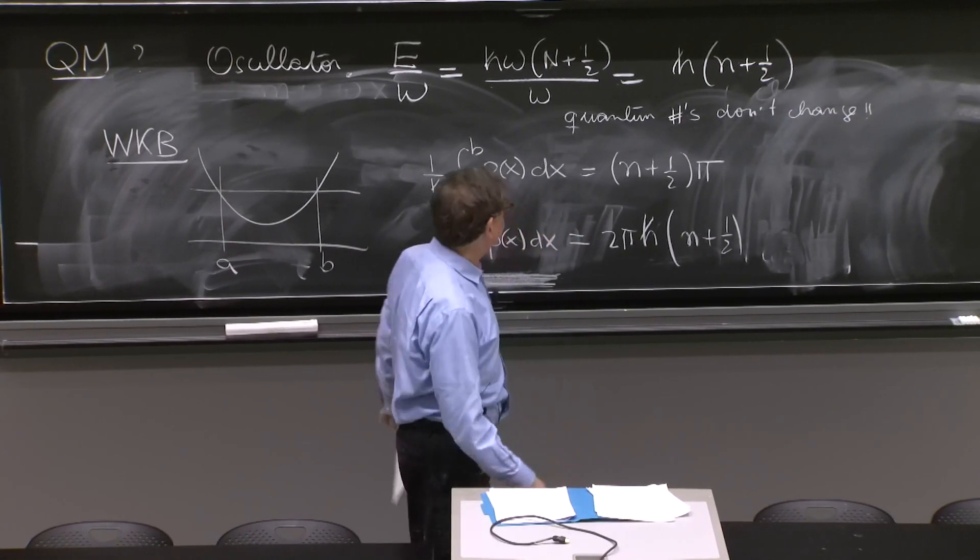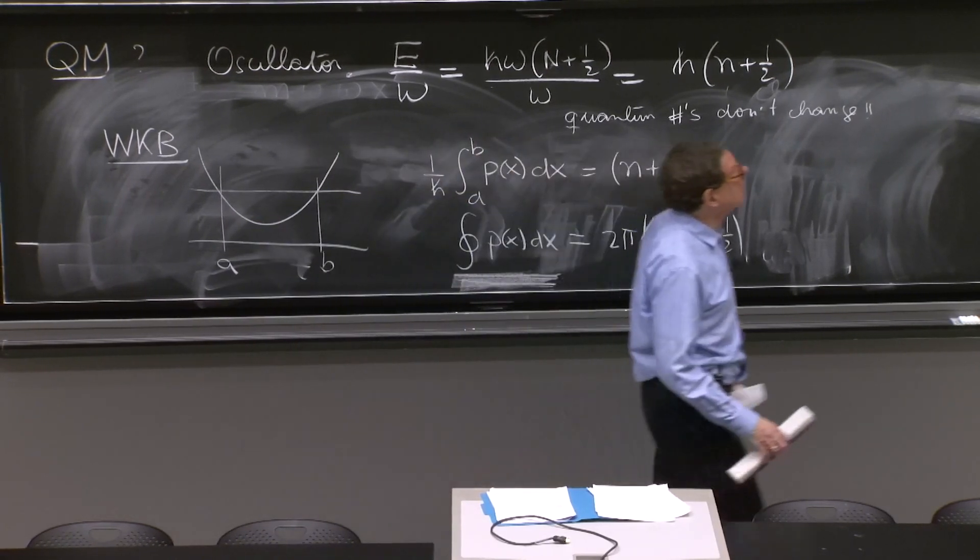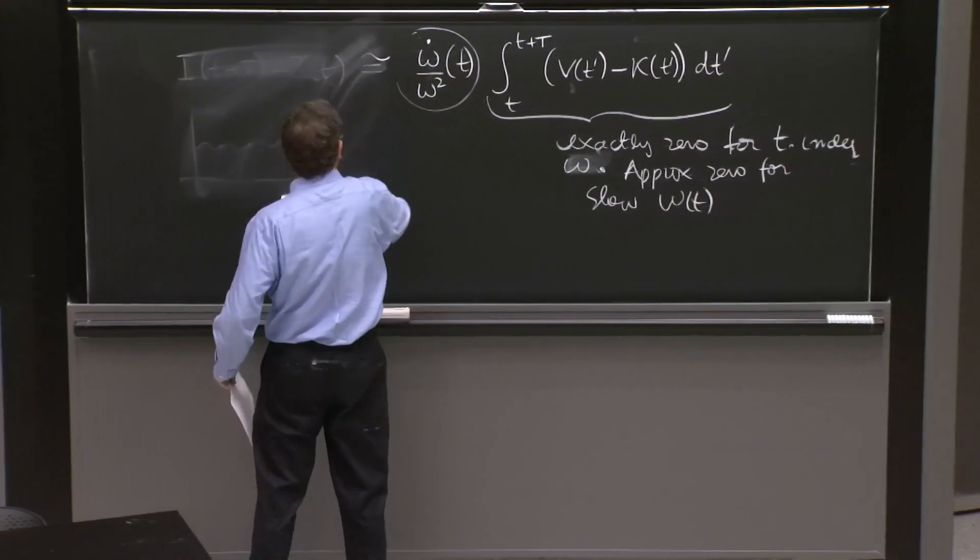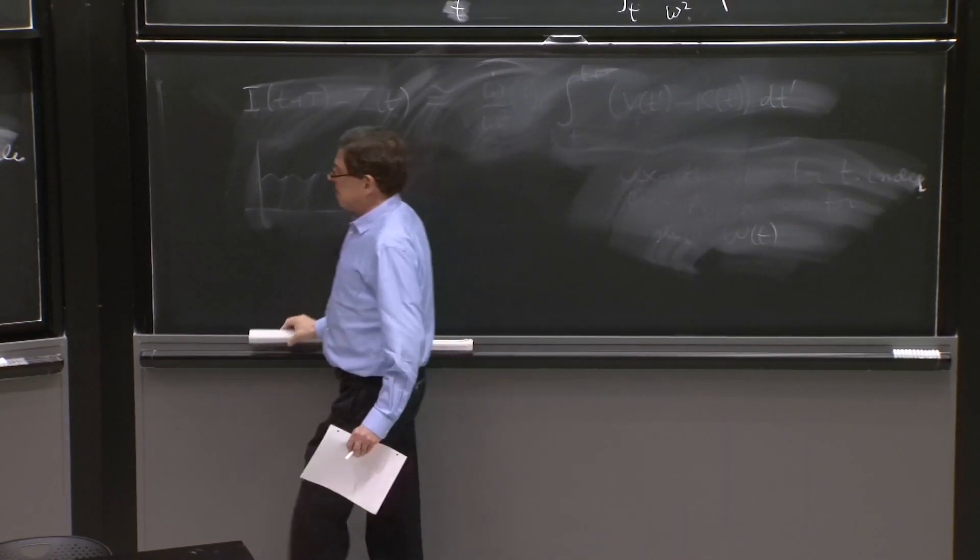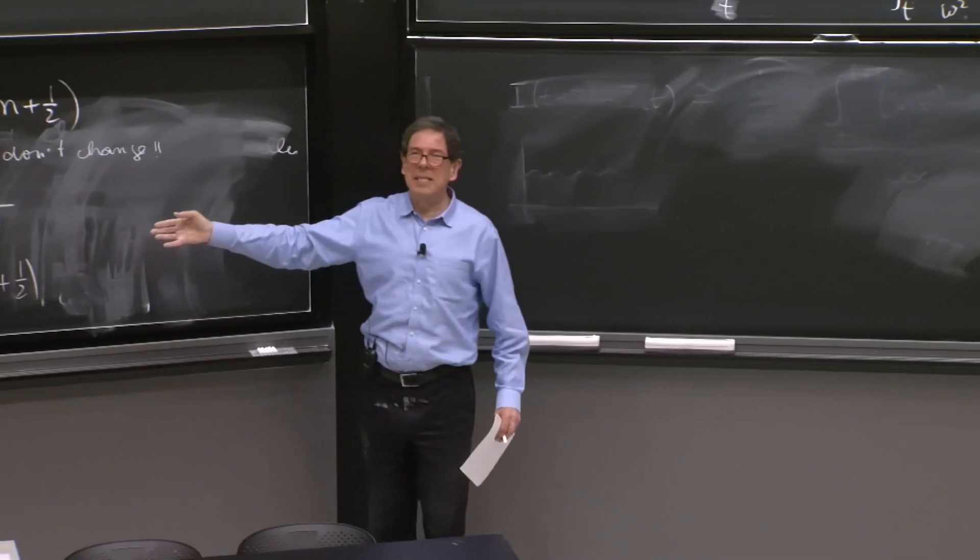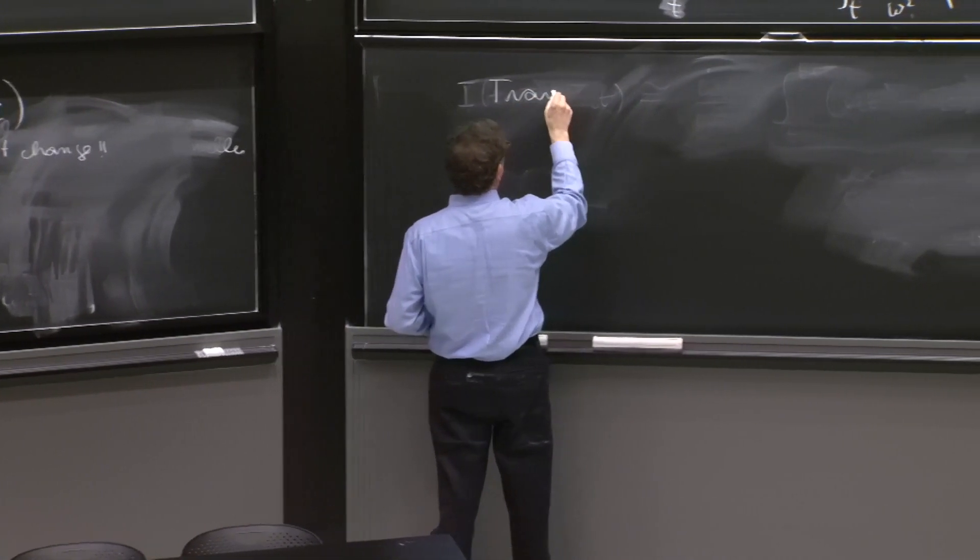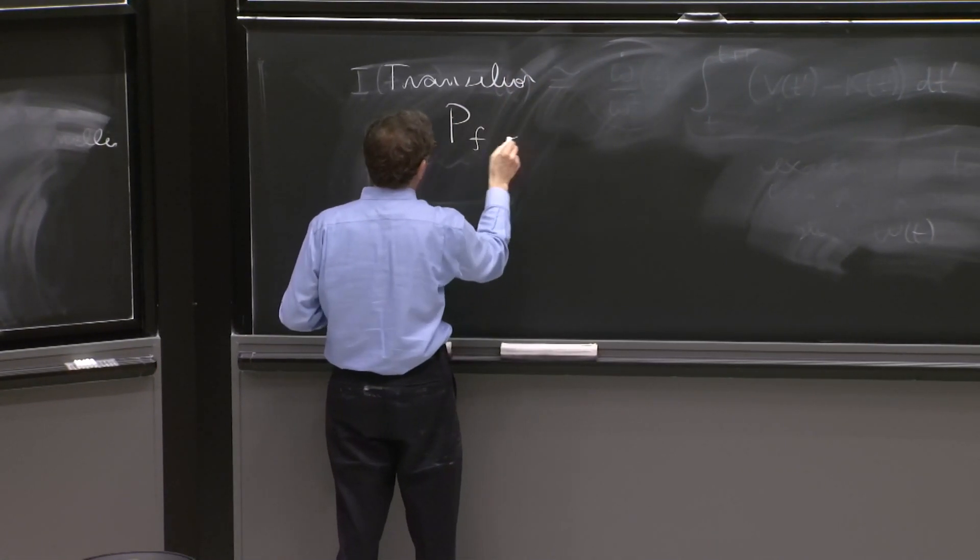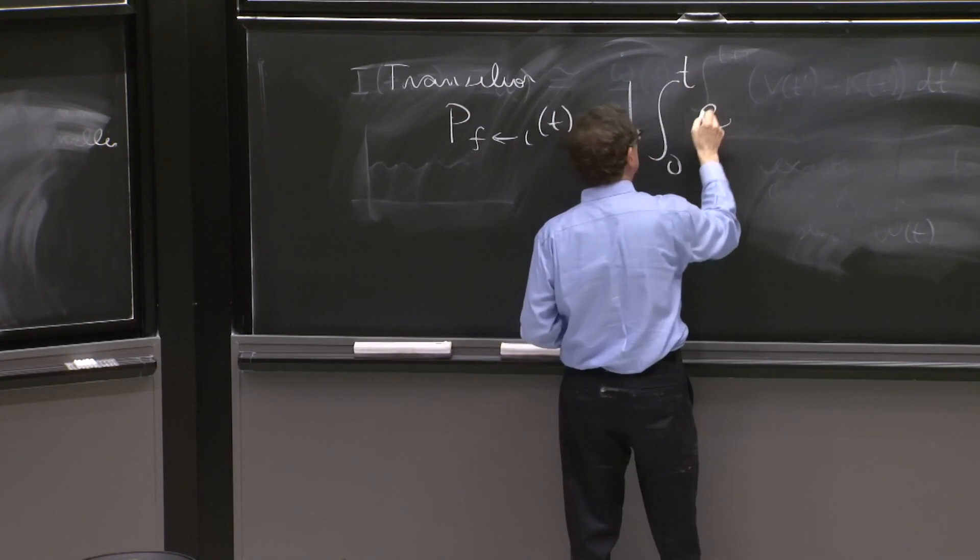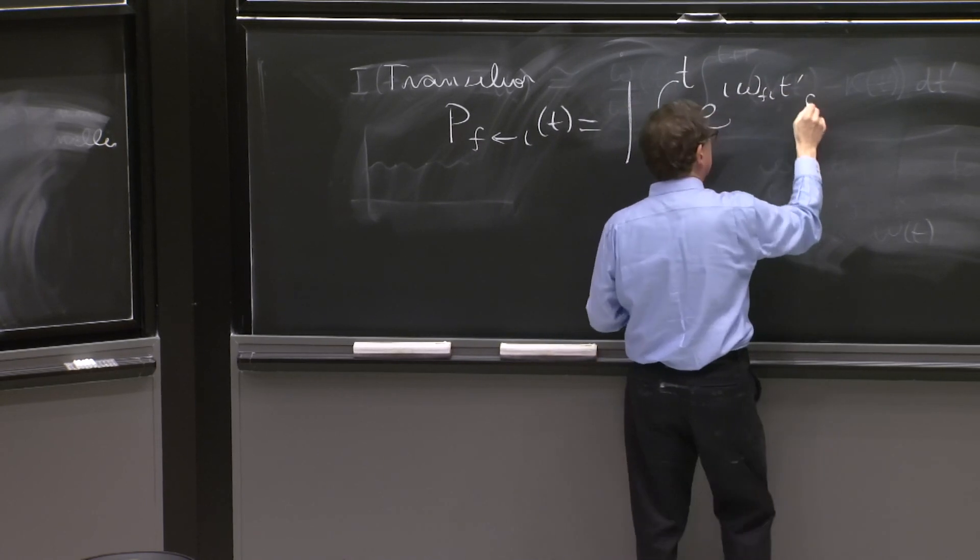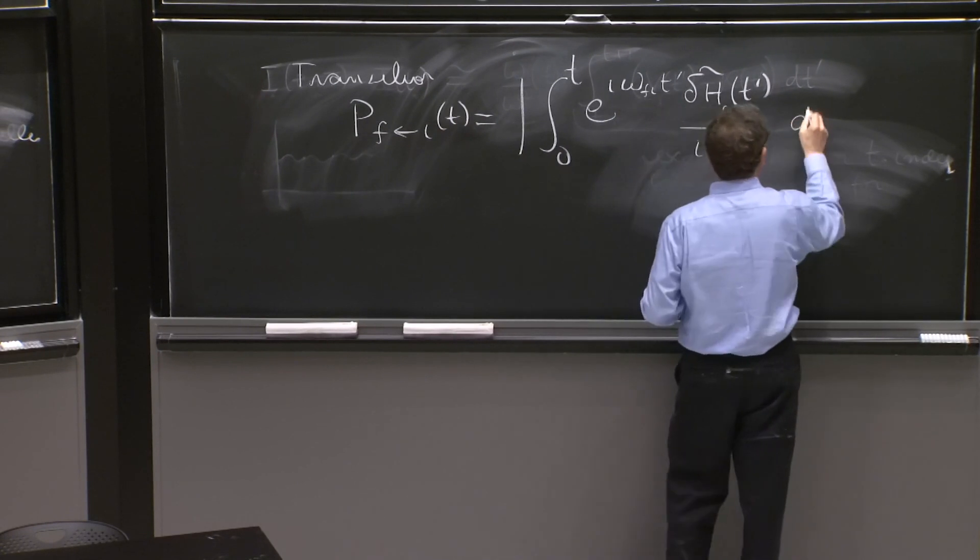Let me make one last comment before we start a real calculation in quantum mechanics about this. Transitions. We studied transitions. And transitions are the kind of things that don't happen easily when you have an adiabatic approximation. So what did we have for transitions? For transitions, we had the probability to go from some initial to some final state was the integral from 0 to t, e to the i omega fi t prime delta h of t prime fi over i h bar dt prime.